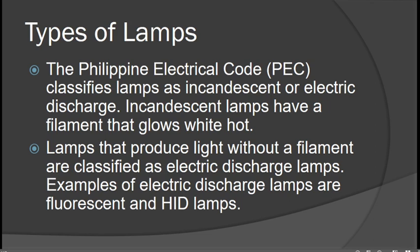According to the Philippine Electrical Code, there are two types of lamps: the incandescent and the electric discharge lamp. The incandescent lamp has a filament — the most common material is tungsten — which glows white hot to produce light. Lamps that produce light without a filament are classified as electric discharge lamps. Examples of electric discharge lamps are fluorescent and HID lamps.